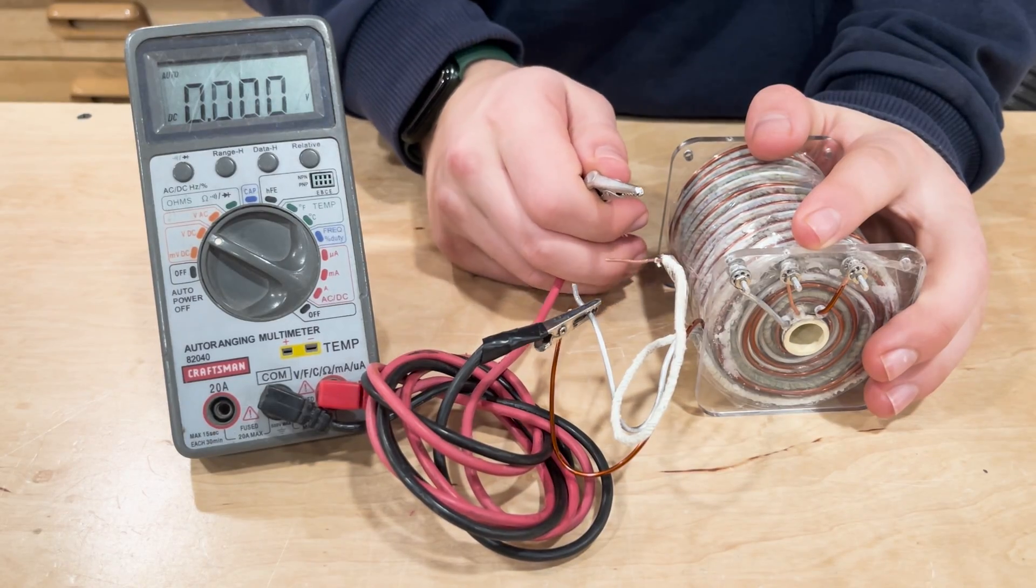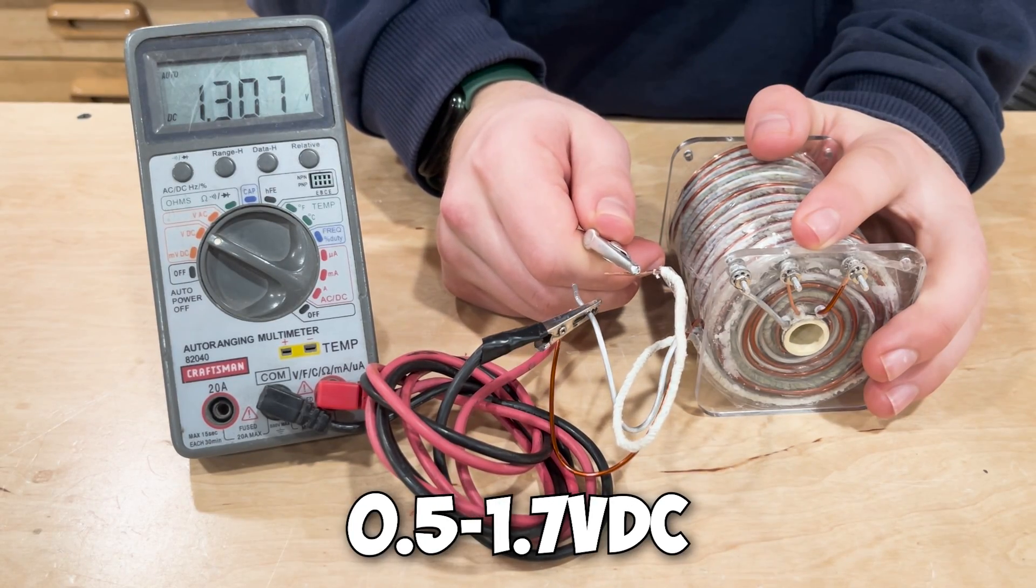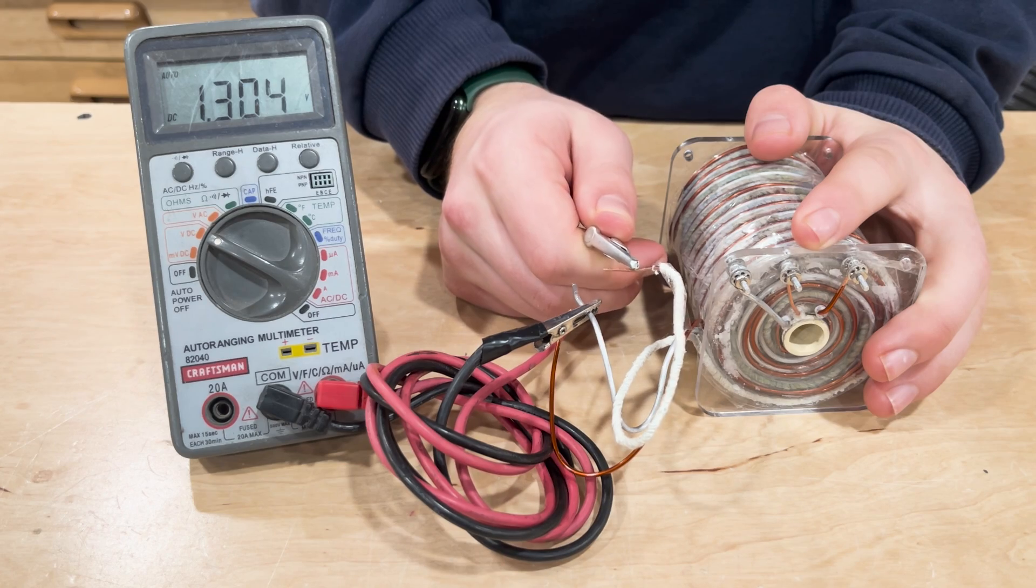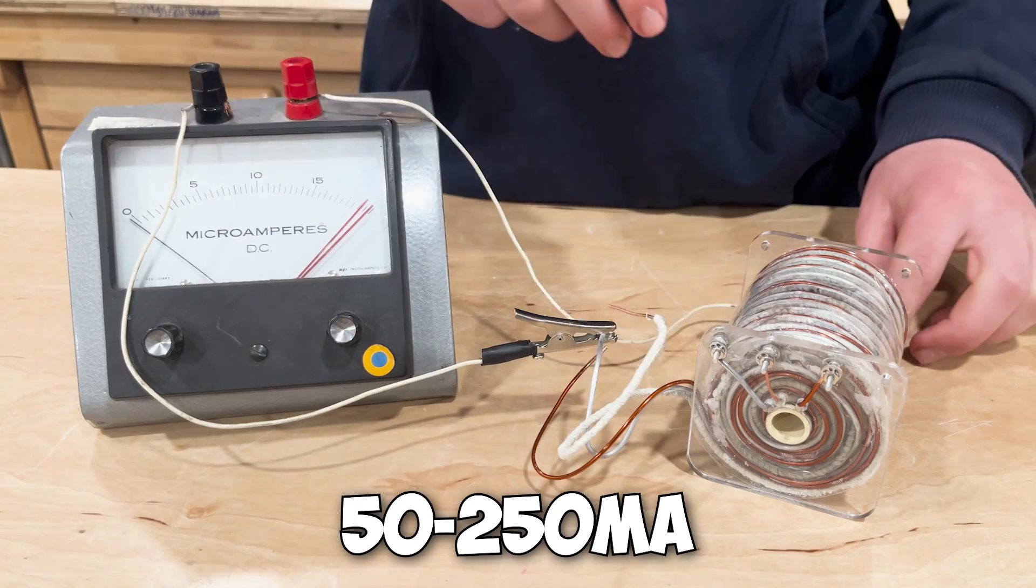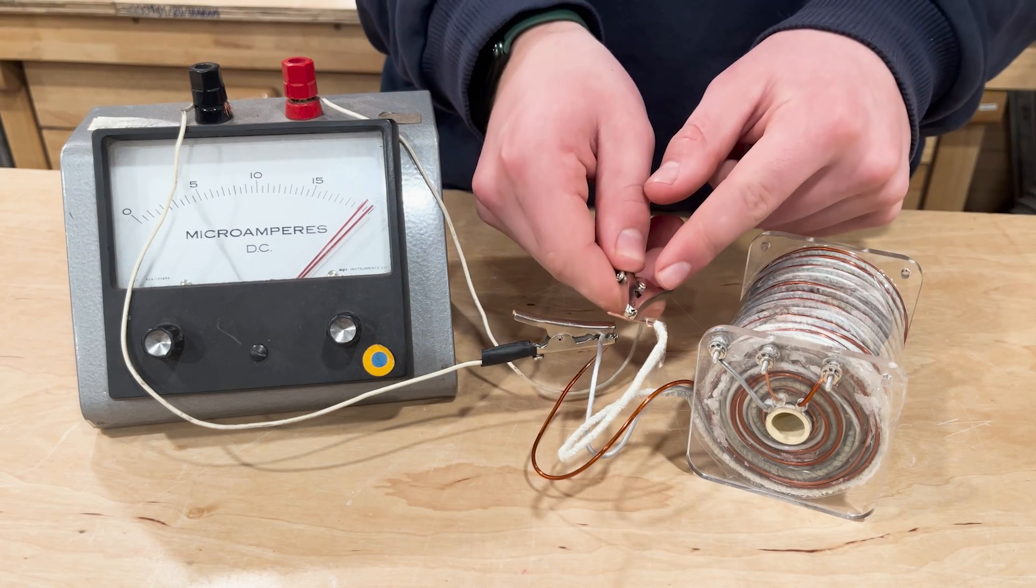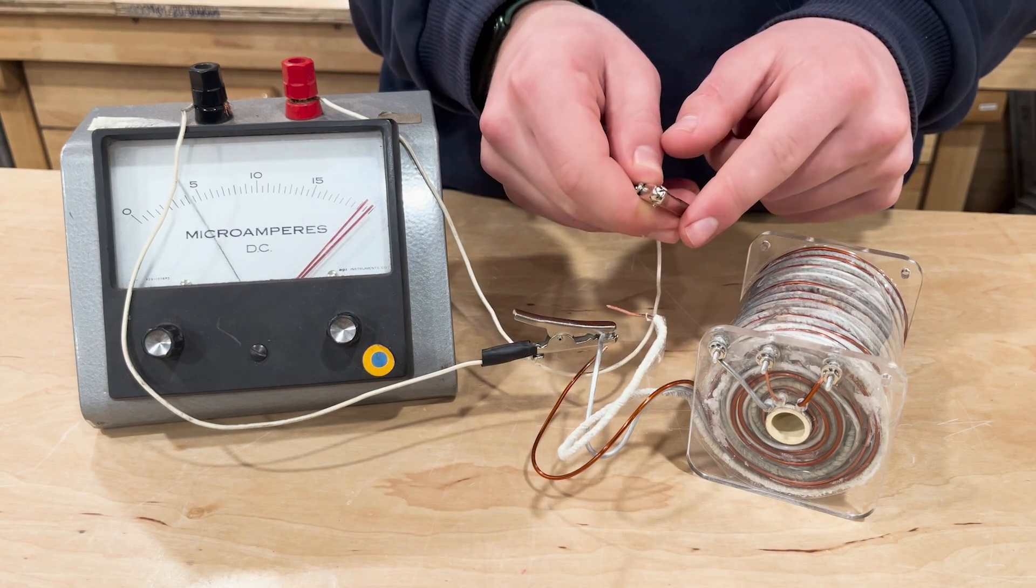It looks like the coil generates about 1.3 volts DC. The current fluctuates between 50mA when under a load to 250mA when the coil is not under a load.